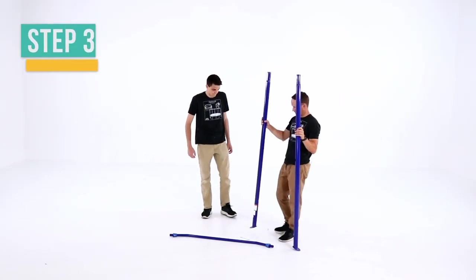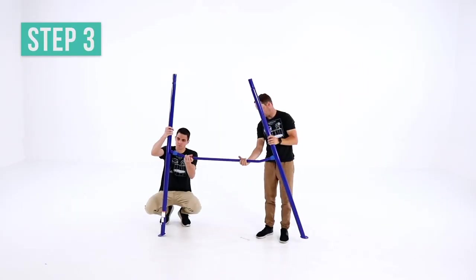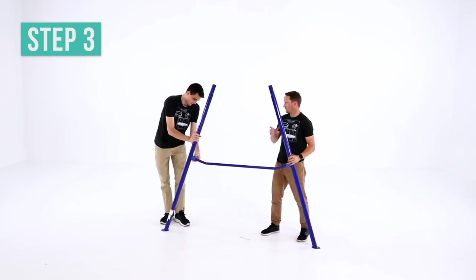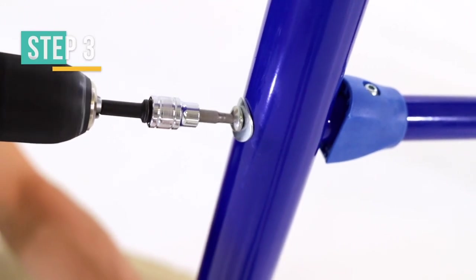Now get the upright one and the upright two poles. Using button bolts and arc washers, secure them to the crossbar with the curve facing down. Don't tighten the bolts all the way.